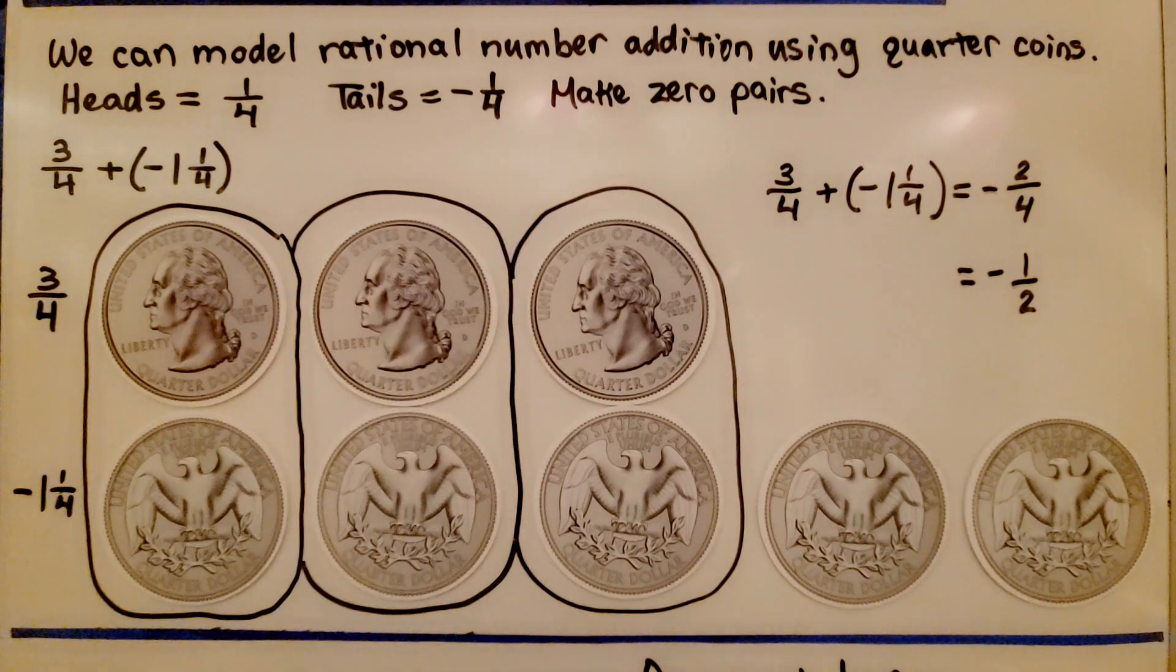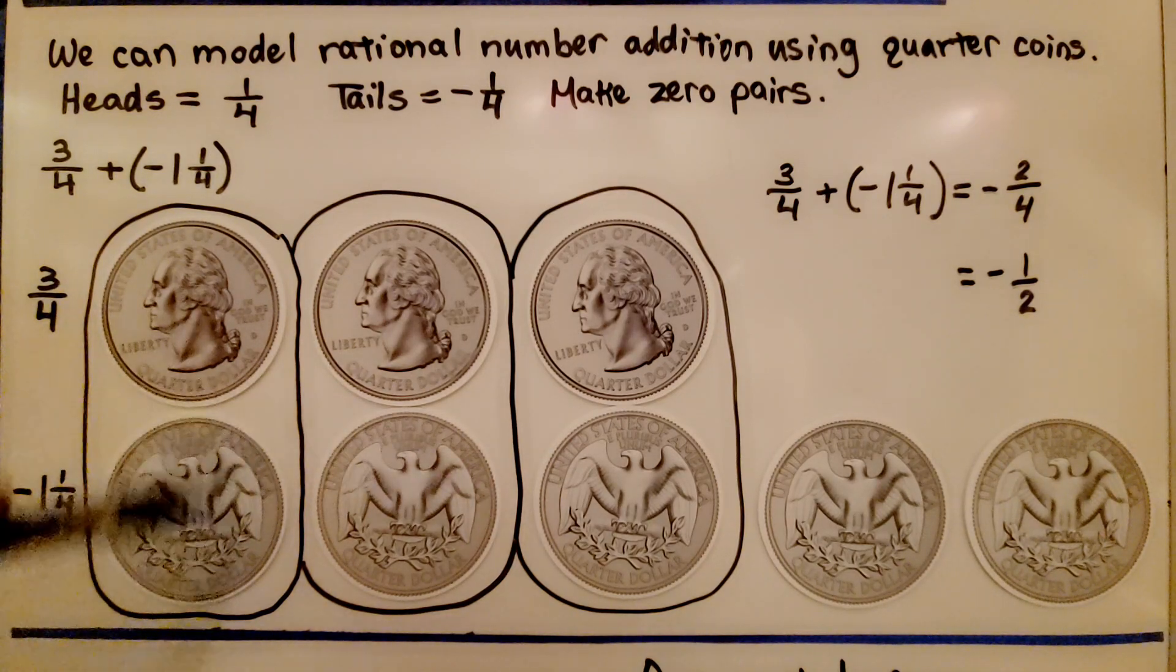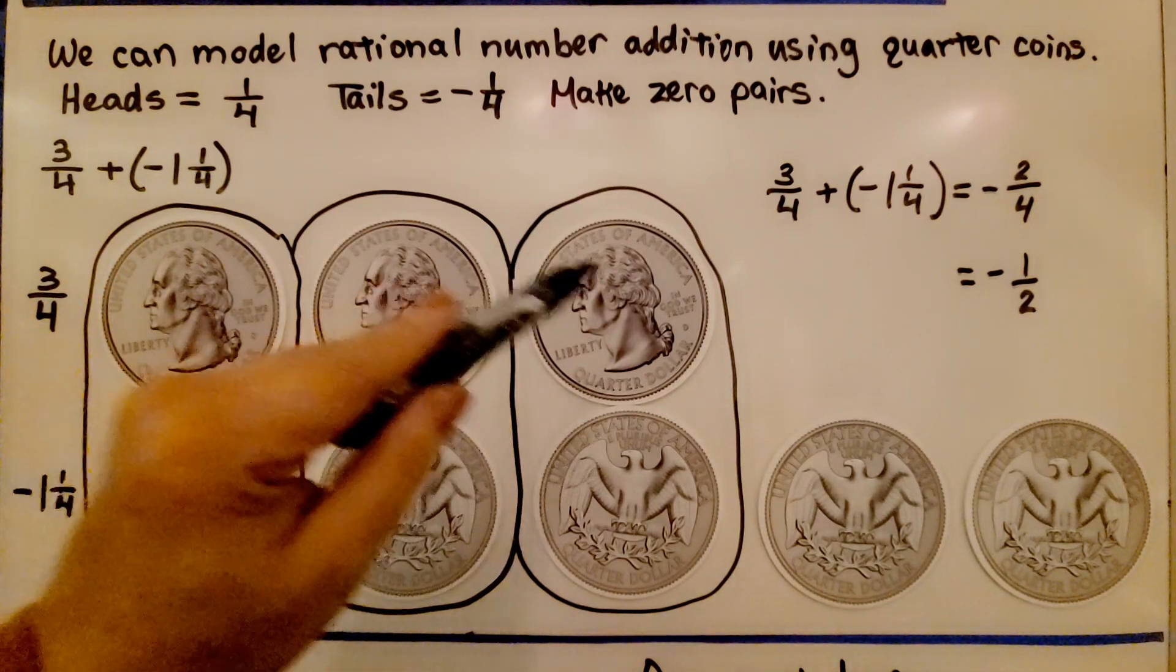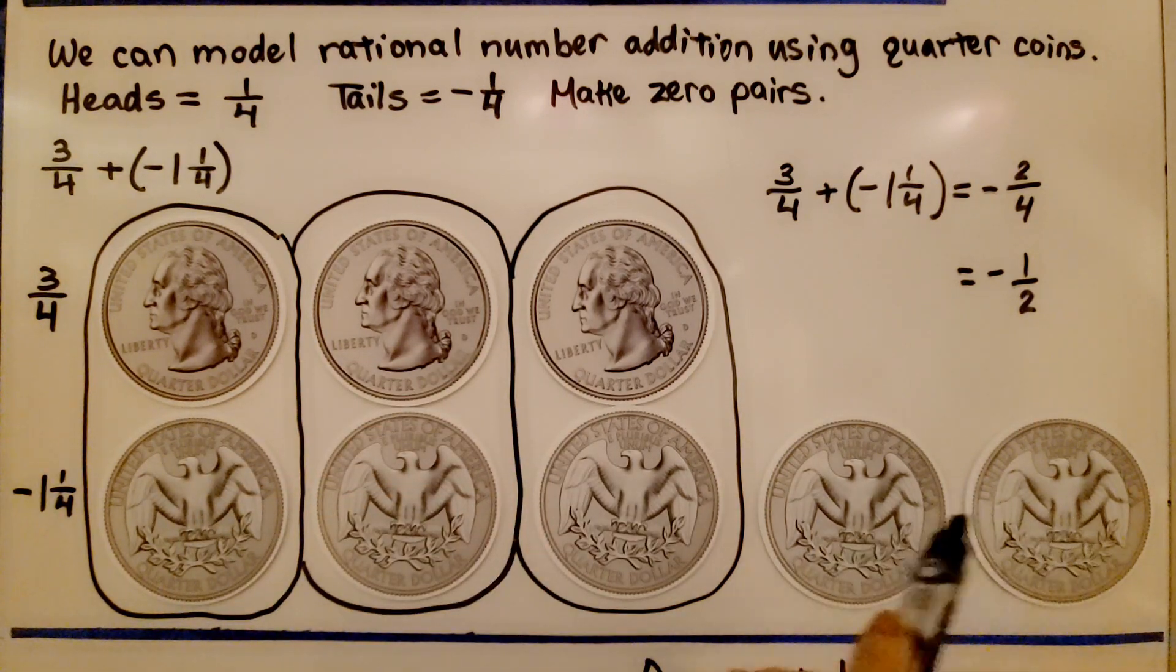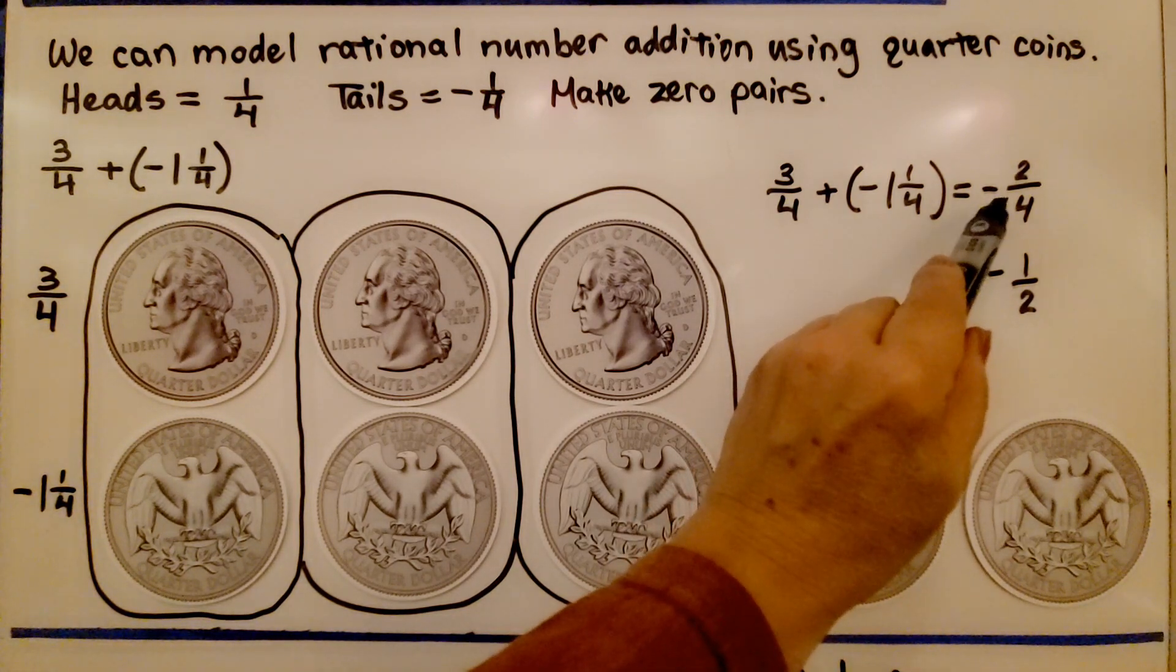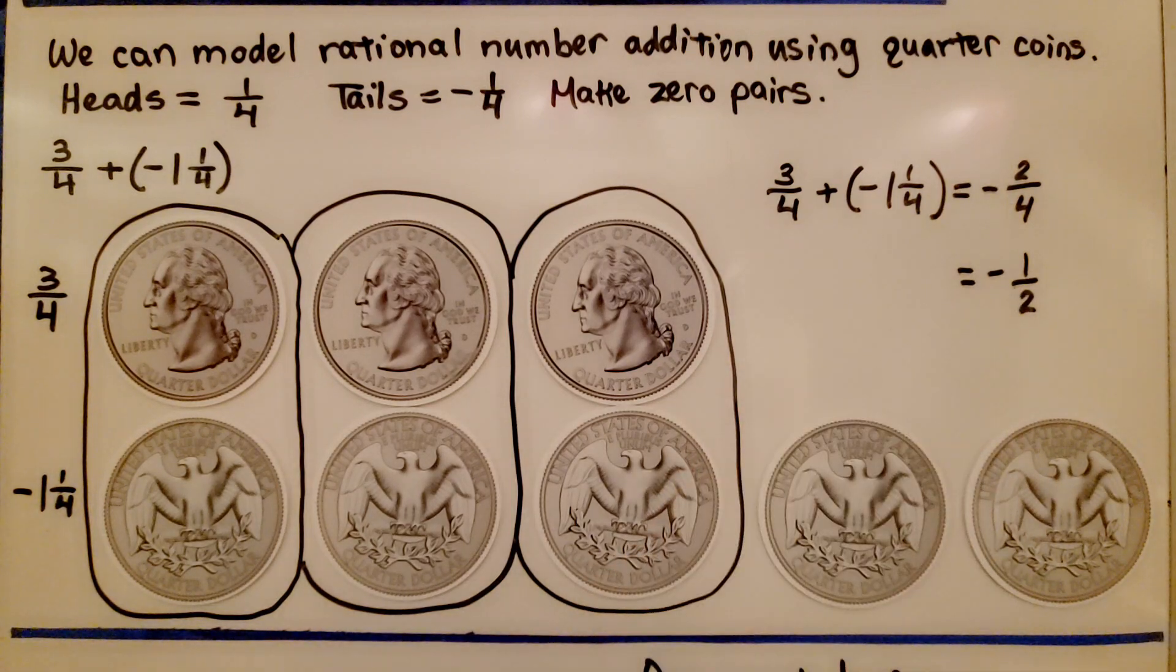We make zero pairs. We have a positive 1 fourth and a negative 1 fourth. That's a zero pair. We have another zero pair. We have another zero pair. And we have two negative 1 fourths remaining. That means we have negative 2 fourths and we can simplify it to its lowest terms as negative one half.